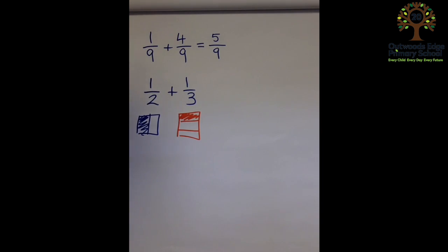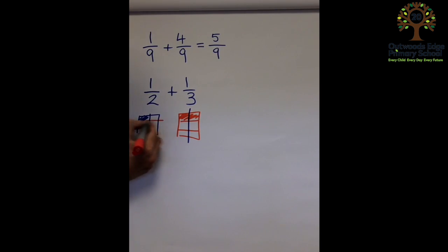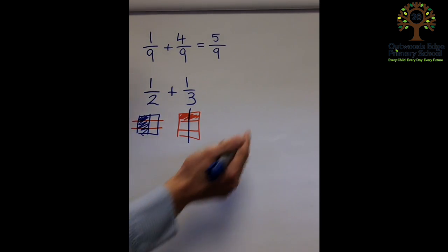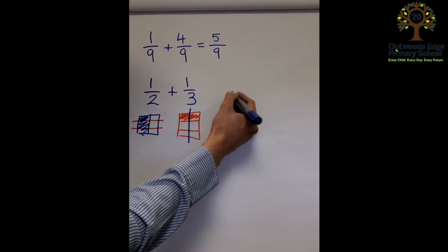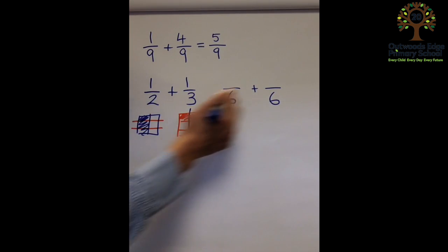Now all I do is transfer my half to that side, and my thirds to this side. And I can see now clearly that on both sides I'm making sixths.